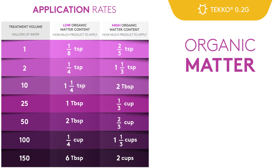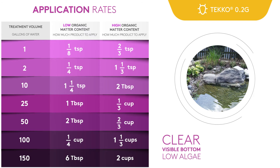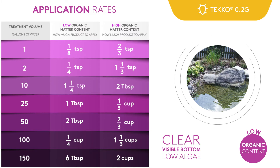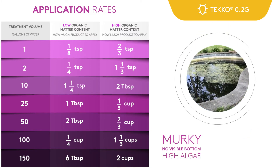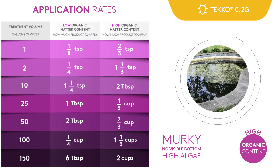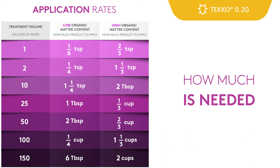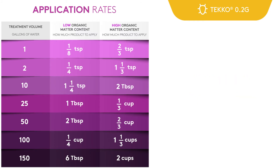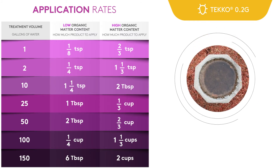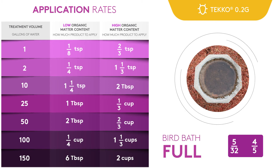Teco 0.2G application rates are also based on how much organic matter is in the water. If the water is clear and the bottom is visible with little algae growth, the water is low in organic material. If the water is murky, the bottom is not visible, and there is high algal growth, the water is high in organic content. This treatment chart will help you determine how much Teco 0.2G you need to add to each treatment area. Going back to the bird bath — if the bird bath is full, you will need between 5/30ths and 4/5ths of a teaspoon of Teco 0.2G to treat that bird bath.